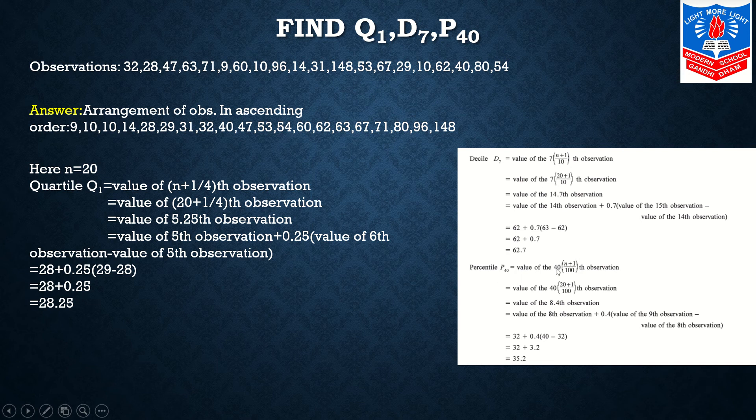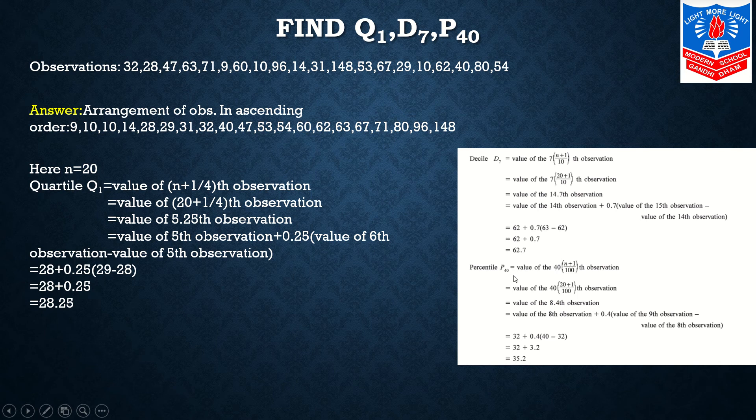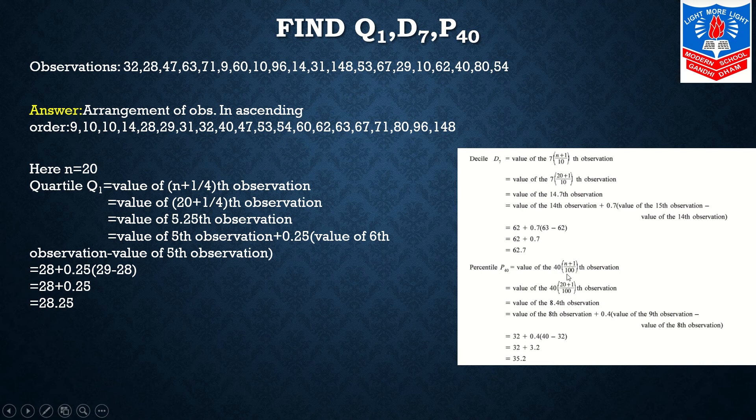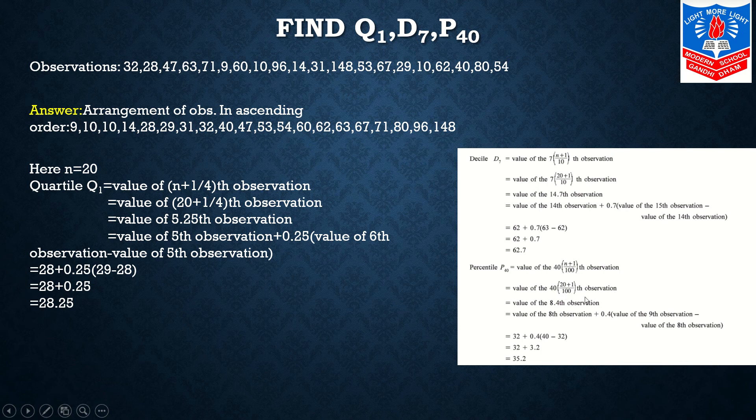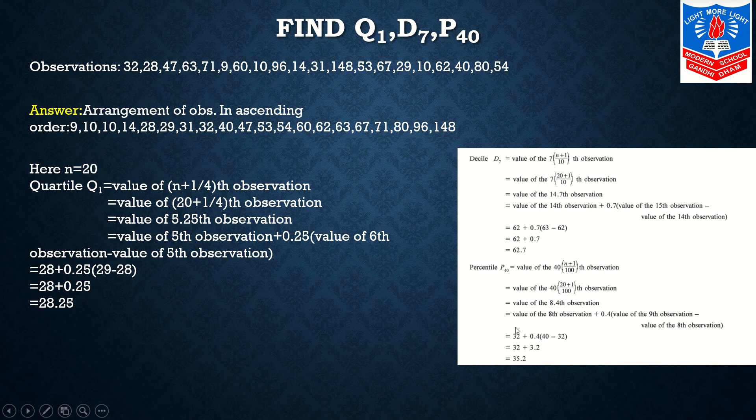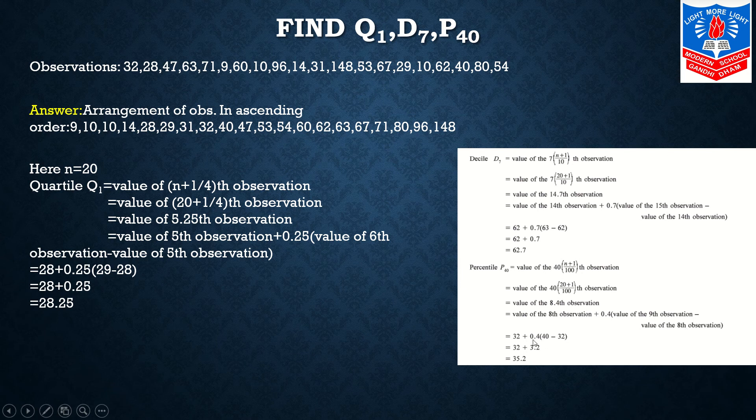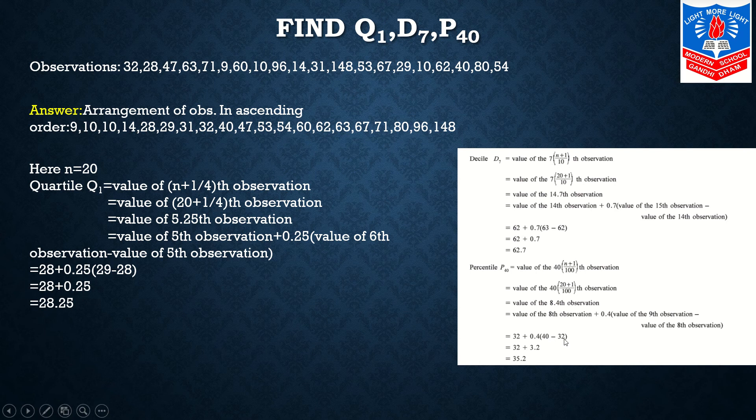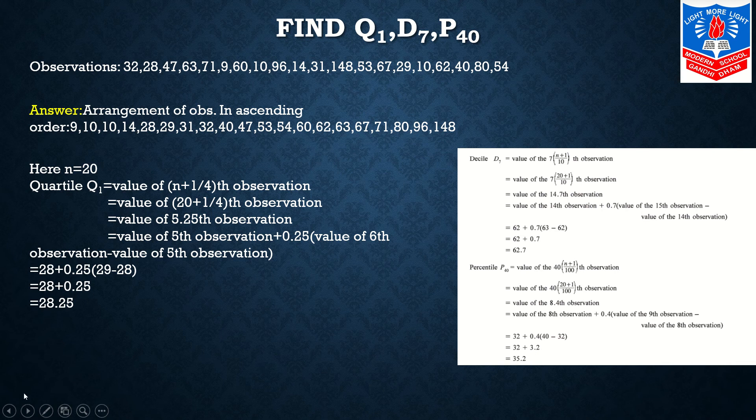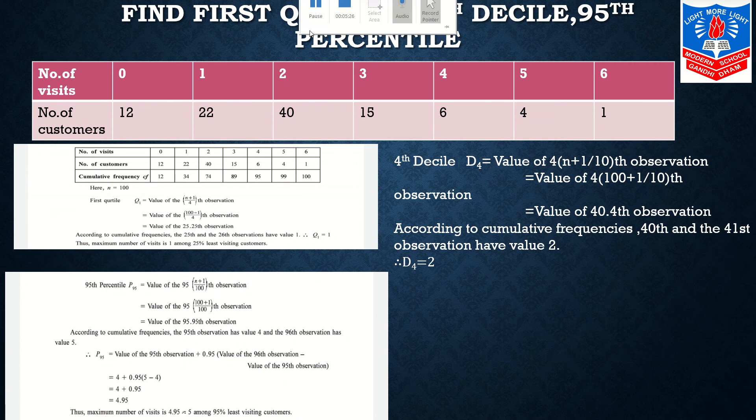Now P40. We write 40 because you are asked P40. Percentiles divide the data in 100 parts, so in denominator we write 100. Rest of the calculations will go same: 40(20+1)/100th observation, 8.4 final calculation. 8.4 will lie between 9th and 8th observation. Value of 8th observation plus 0.4(9th - 8th observation) is 32 + 0.4(40 - 38). Final answer is 35.2.